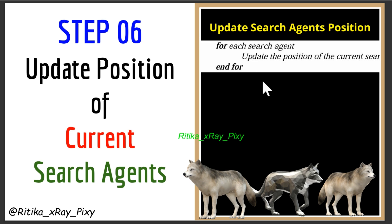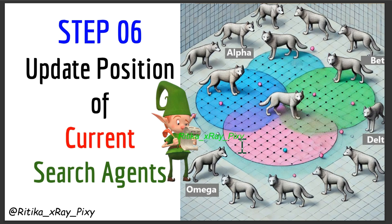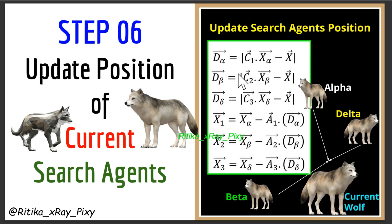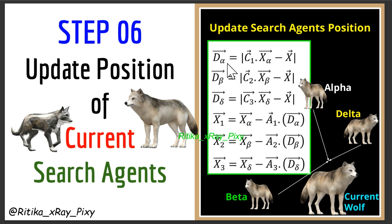Now we update positions based on alpha, beta, and delta using different mathematical models. In an optimization problem, we focus on the optimal solution, but the position of that optimal solution (prey) is unknown. So we consider the prey as the optimal solution, and alpha, beta, delta are the top 3 best solutions that guide the movement of all other wolves. We calculate distance vectors: D_alpha = |C1 × X_alpha − X|, and similarly D_beta and D_delta, where C is the coefficient vector used to control step size.